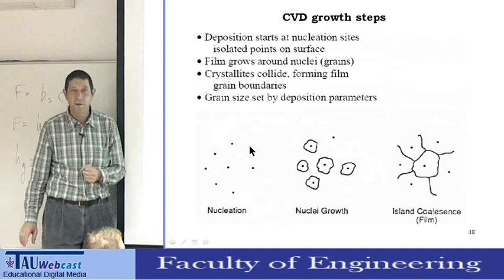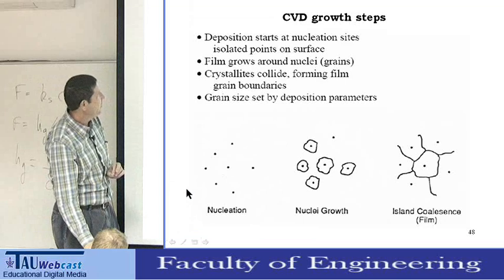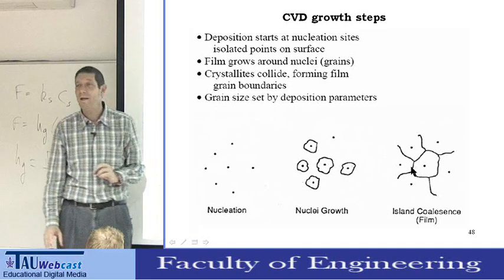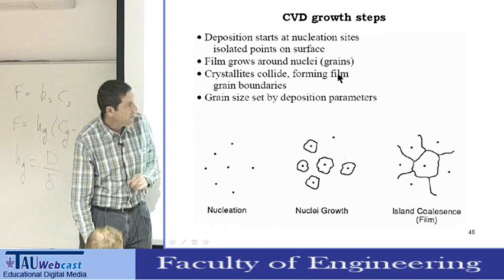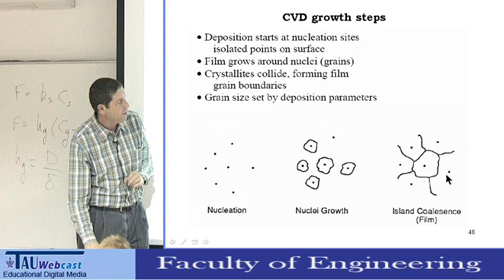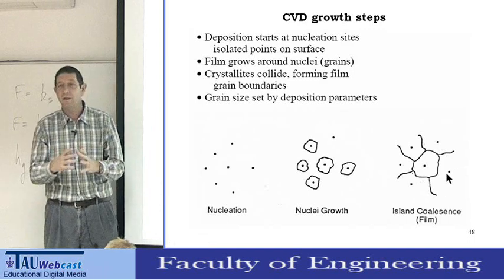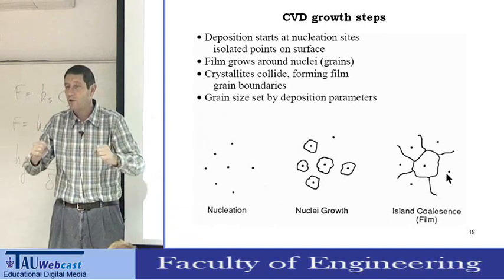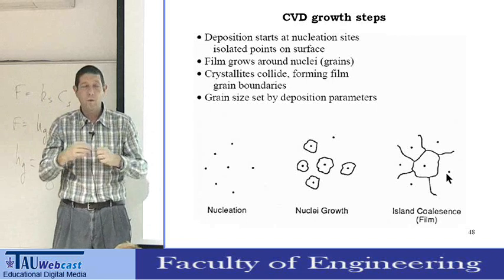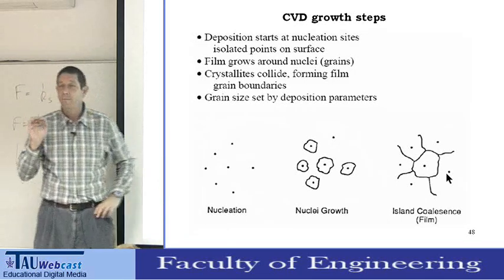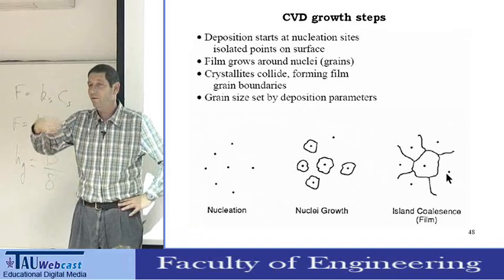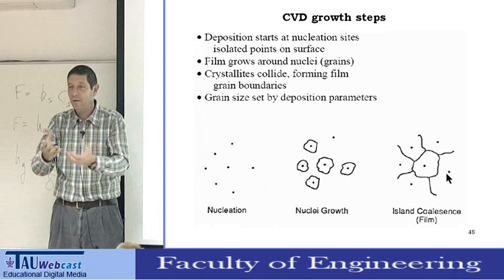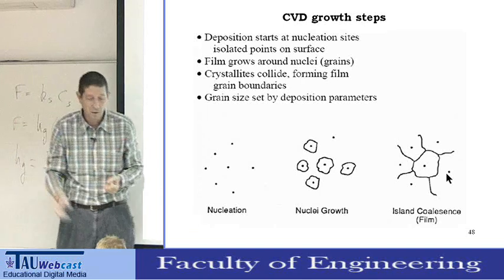The growth initially has islands on the surface and nucleation sites. The nuclei grow until they merge — what we call coalescence. Coalescence is when small nuclei merge together and generate a uniform film, and can generate very interesting structures: random grains, or columnar grains like needles. The way we describe thin film growth is by a two-step process: nucleation and then growth.